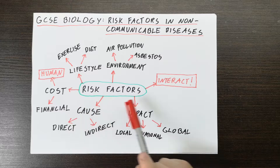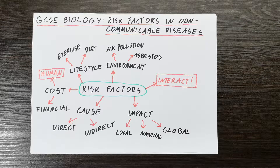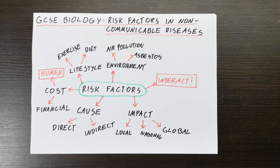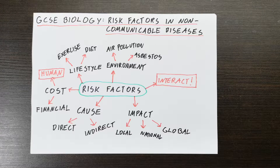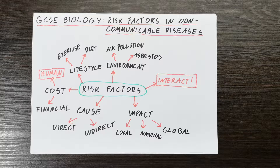First of all, here we have risk factors. What are risk factors? Risk factors are certain factors — certain lifestyle choices or genetic factors, natural factors — that increase the risk of getting a certain disease. But they do not ensure that you will get a disease. They increase the chance, making you more likely to get a certain disease, but they are not a 100% certainty.